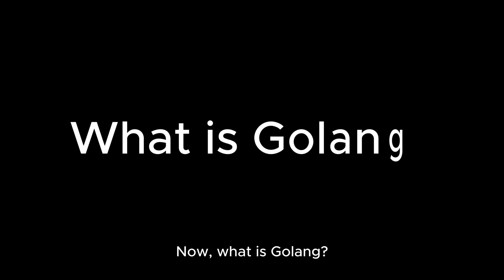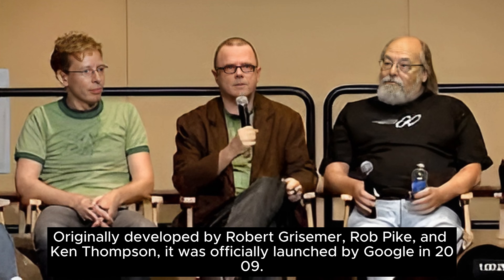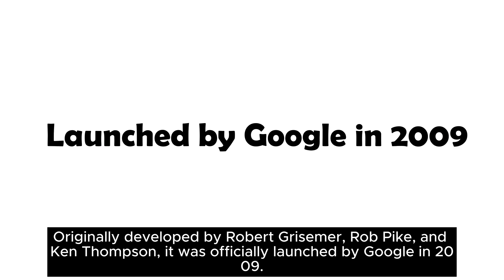Now, what is Golang? Golang, or Go, is an open-source, procedural-oriented, and statically typed programming language. Originally developed by Robert Griesemer, Rob Pike, and Ken Thompson, it was officially launched by Google in 2009.